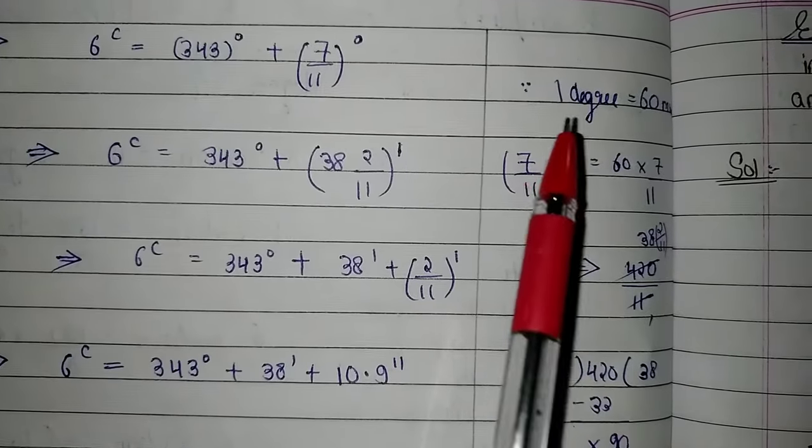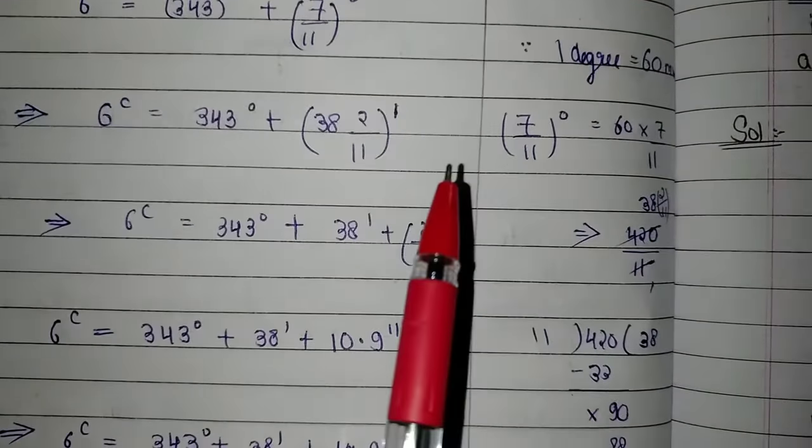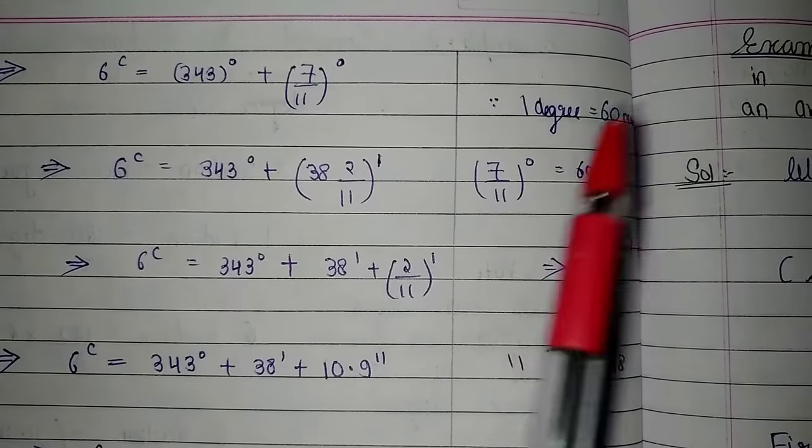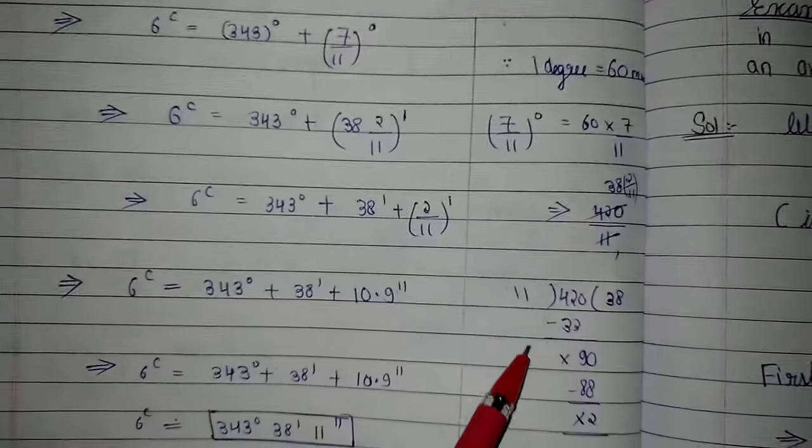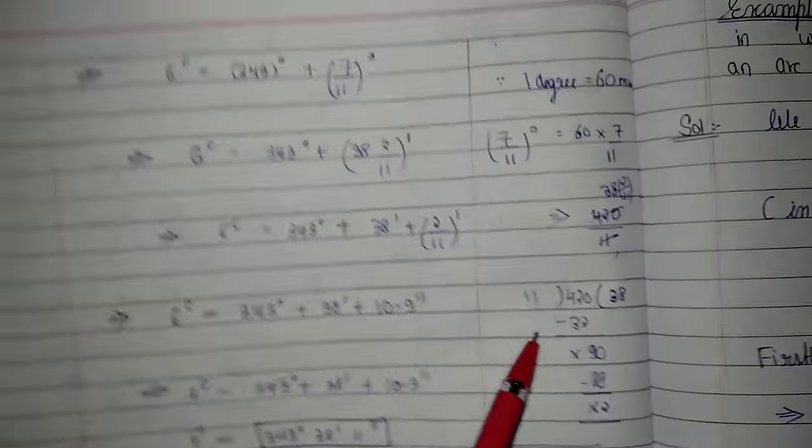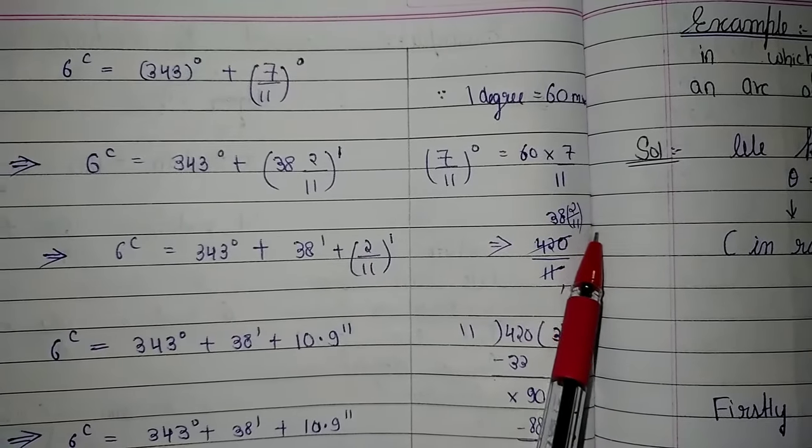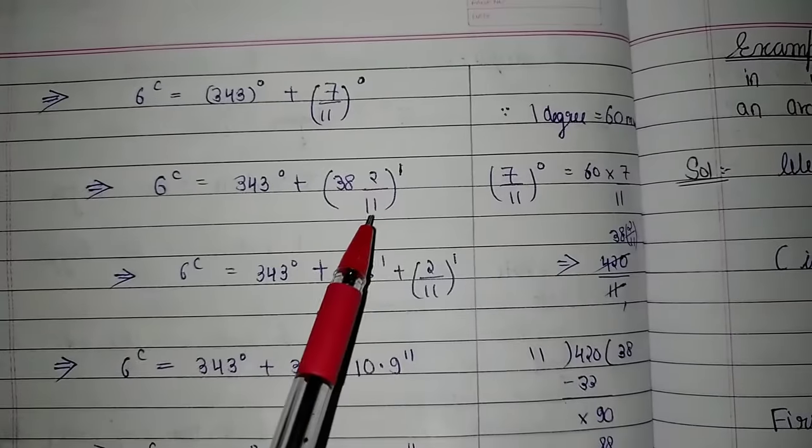Since 1 degree equals 60 minutes, 7 upon 11 degree equals 7/11 times 60 minutes. Then we solve it, which gives us 420 upon 11. This equals 38 and 2 upon 11 minutes.